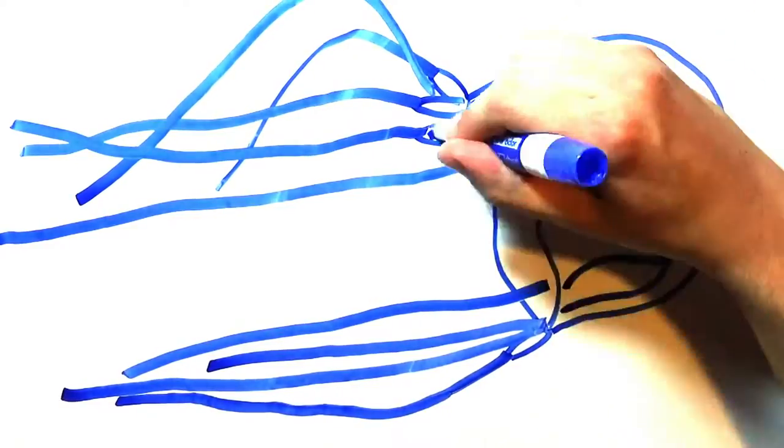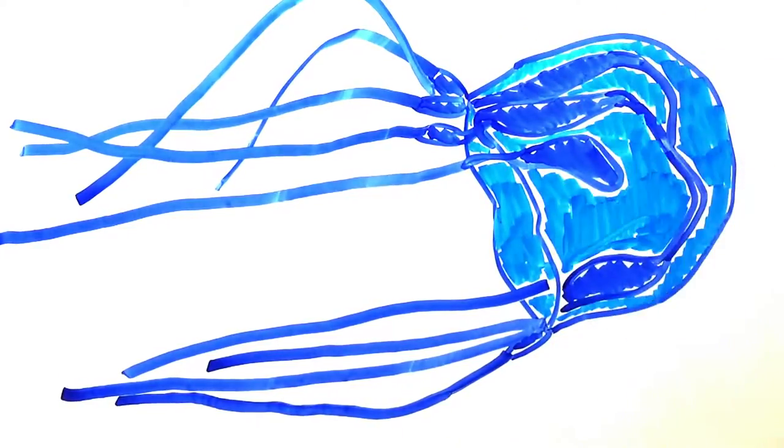The box jellyfish, infamous for its terrible sting, only has a small number of neurons in its tentacles and eyes. Even without anything resembling a brain, the box jellyfish can navigate to its mangrove habitat and sense light with its 24 eyes.